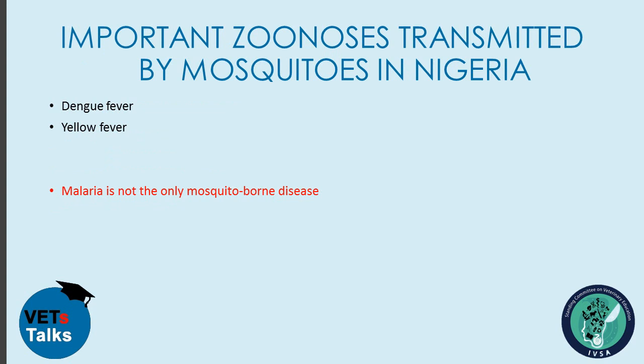We'll be looking at important zoonoses transmitted by mosquitoes in Nigeria. I will be talking about two of these zoonoses: dengue fever and yellow fever. Interestingly, many Nigerians think malaria is the only mosquito-borne disease, but this is not true, as mosquitoes can also transmit very deadly diseases like dengue fever and yellow fever.